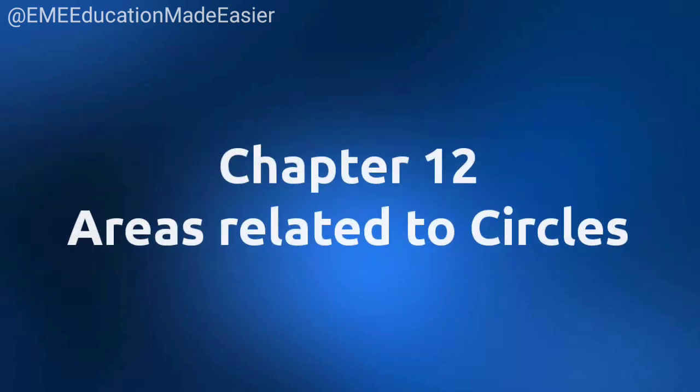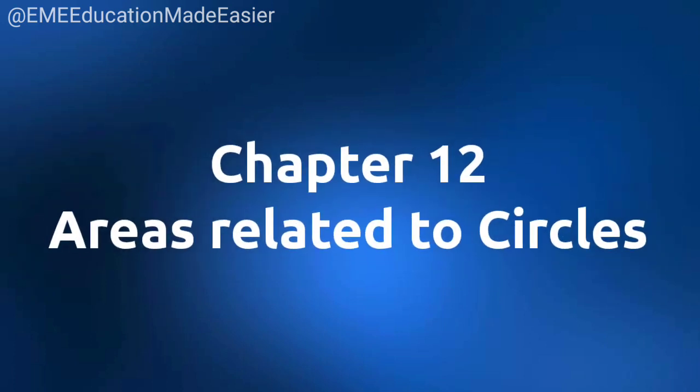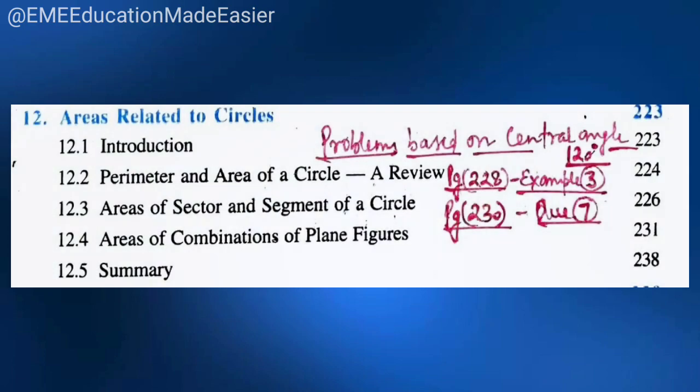Now chapter number 12, Areas Related to Circles. Problems based on a central angle of 120 degrees are not coming. As you can see on page 228, example 3, and page number 230, question 7 — only these problems are not coming.